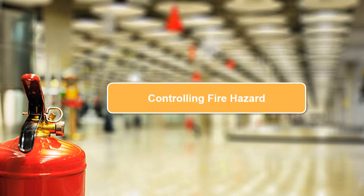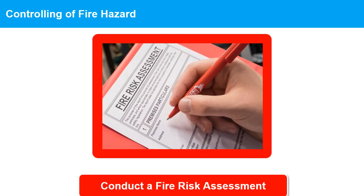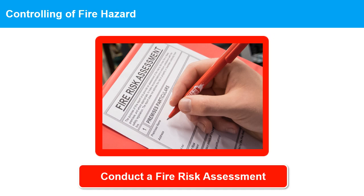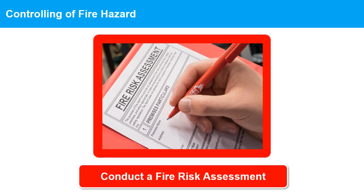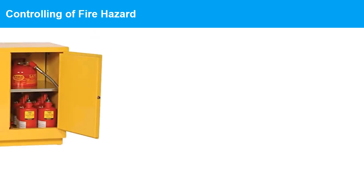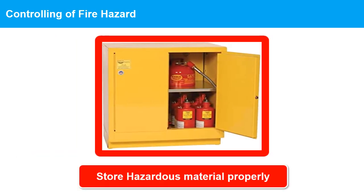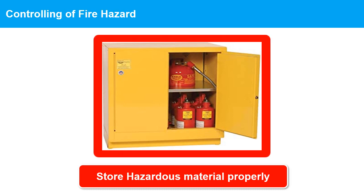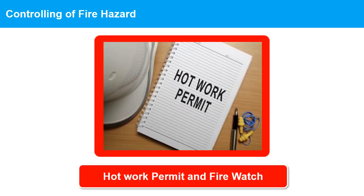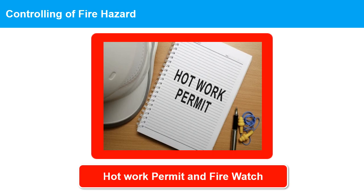Here are some tips for controlling fire hazards in industry. 1. Conduct a fire risk assessment: identify fire hazards and assess the risk of potential fire incidents — this can help you develop a plan to mitigate the risk of fires. 2. Install and maintain smoke detectors and fire alarms; test them regularly to ensure they are in good working order. 3. Store hazardous materials properly: keep flammable and combustible materials in designated storage areas away from sources of heat and ignition. 4. Use a hot work permit and fire watch to control the risk of fire when performing hot work activities such as welding, cutting, or grinding in an industrial facility.